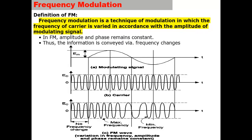Let us look at what is meant by frequency modulation. As we have already defined, frequency modulation is a technique in which the frequency of the carrier is varied in accordance with the instantaneous amplitude of the modulating signal. In this case, the amplitude and phase remain constant while the frequency changes with the instantaneous value of the modulating signal.